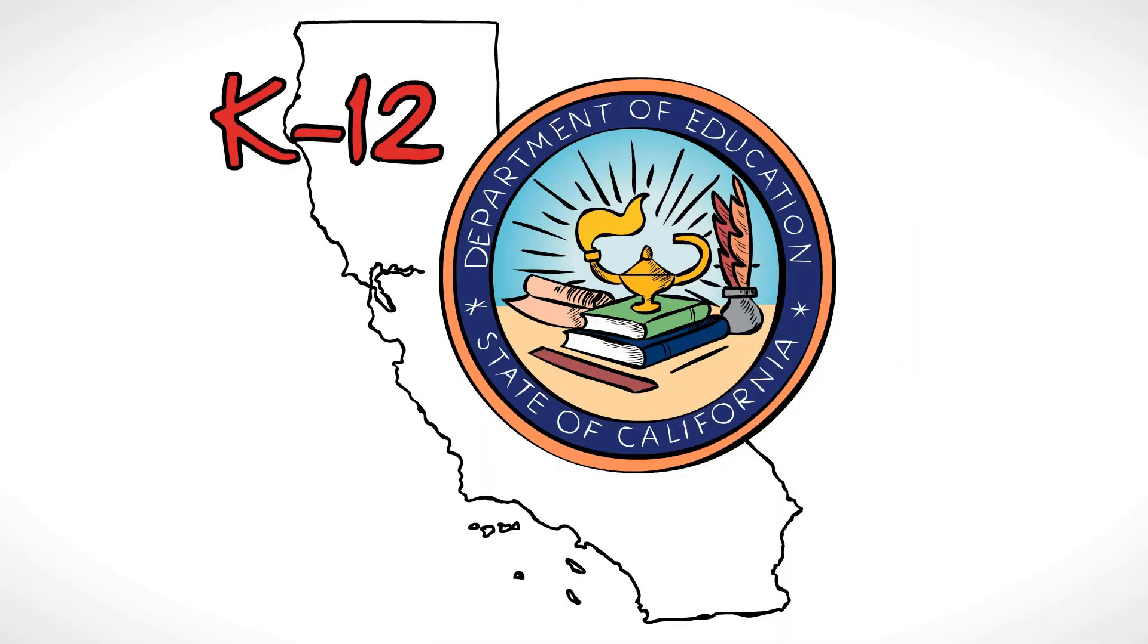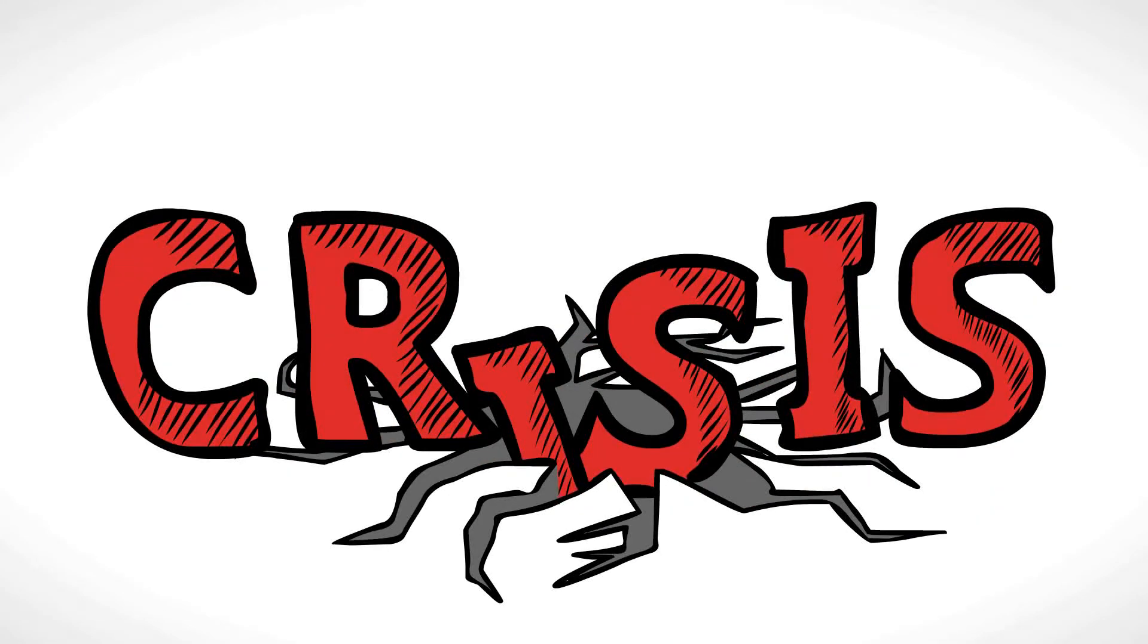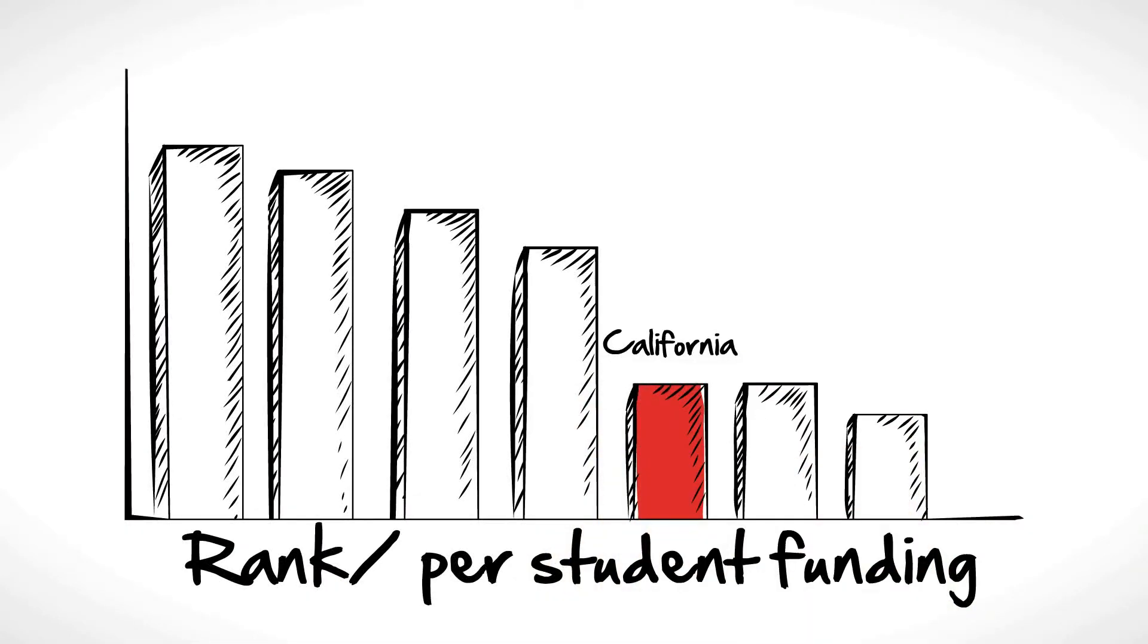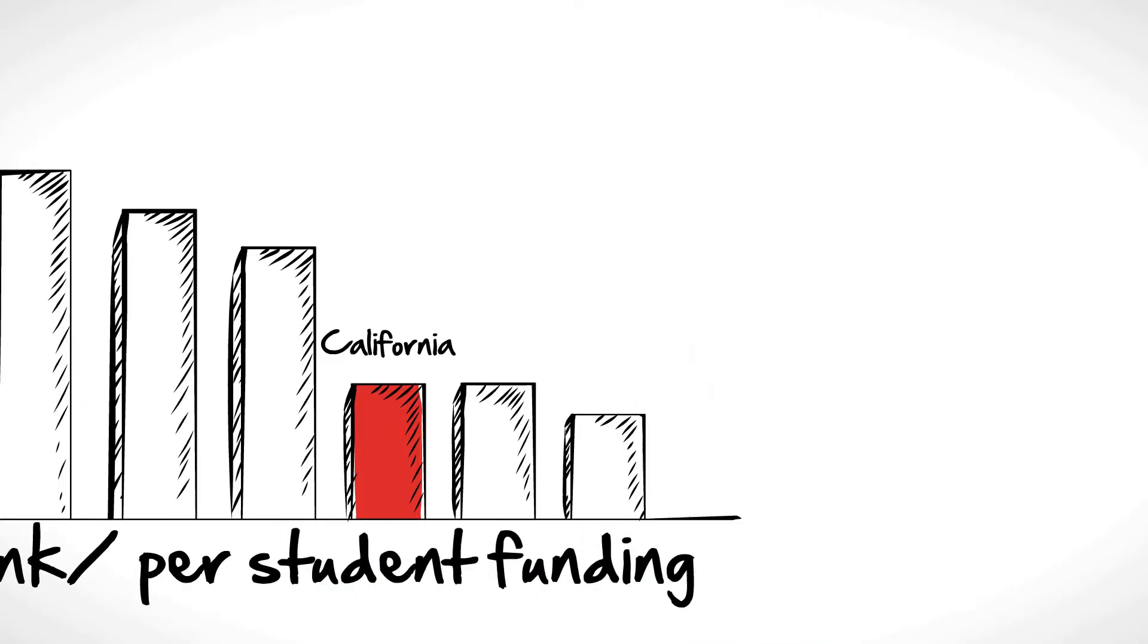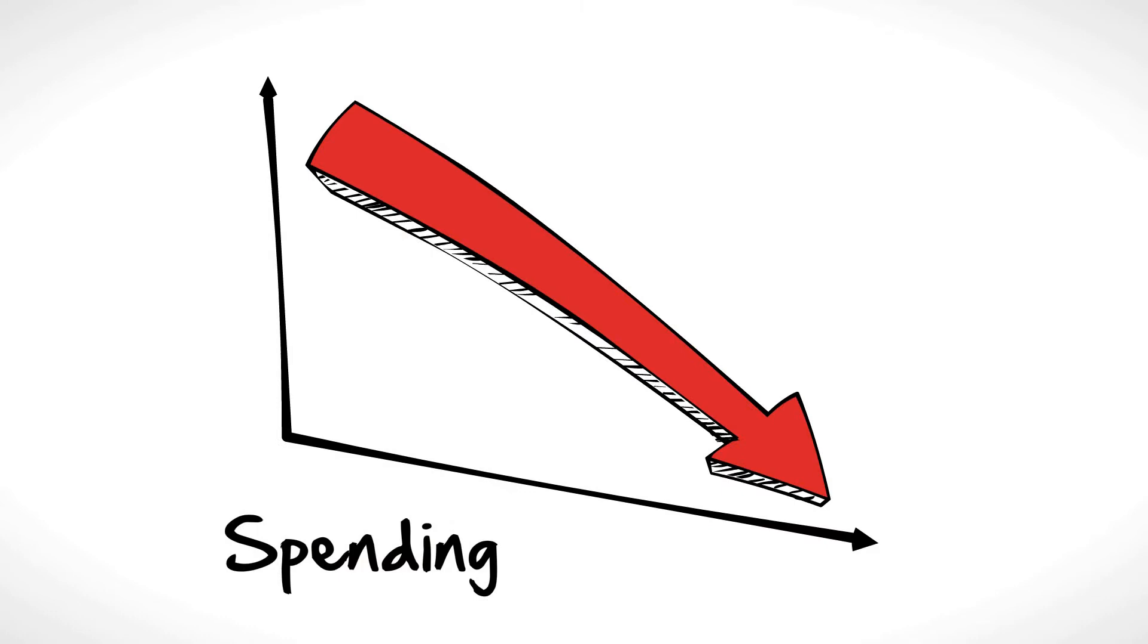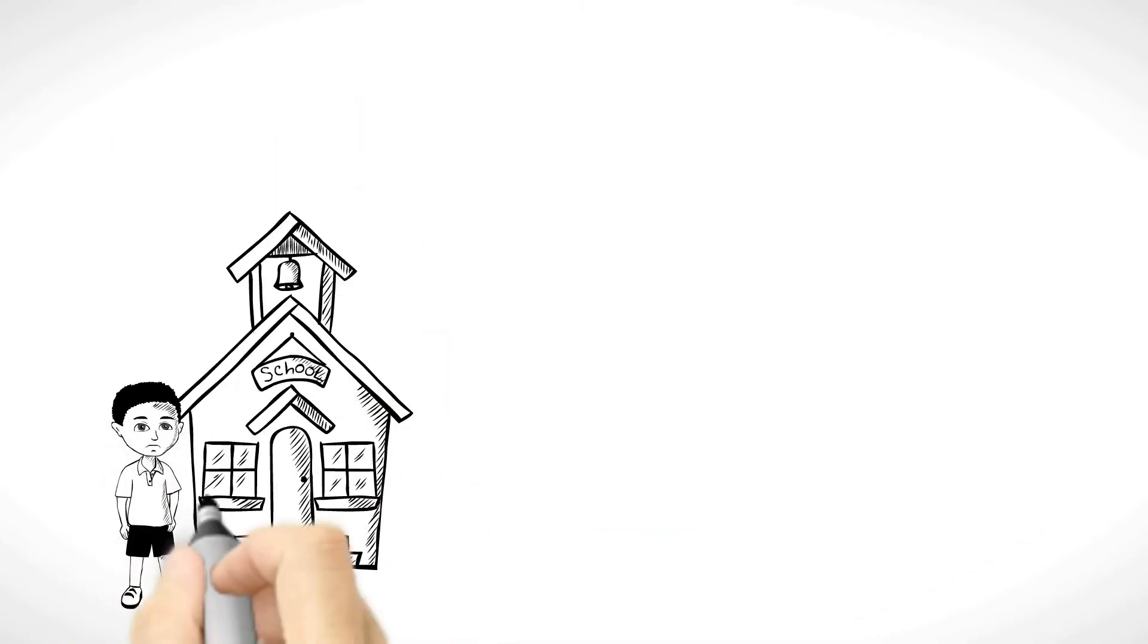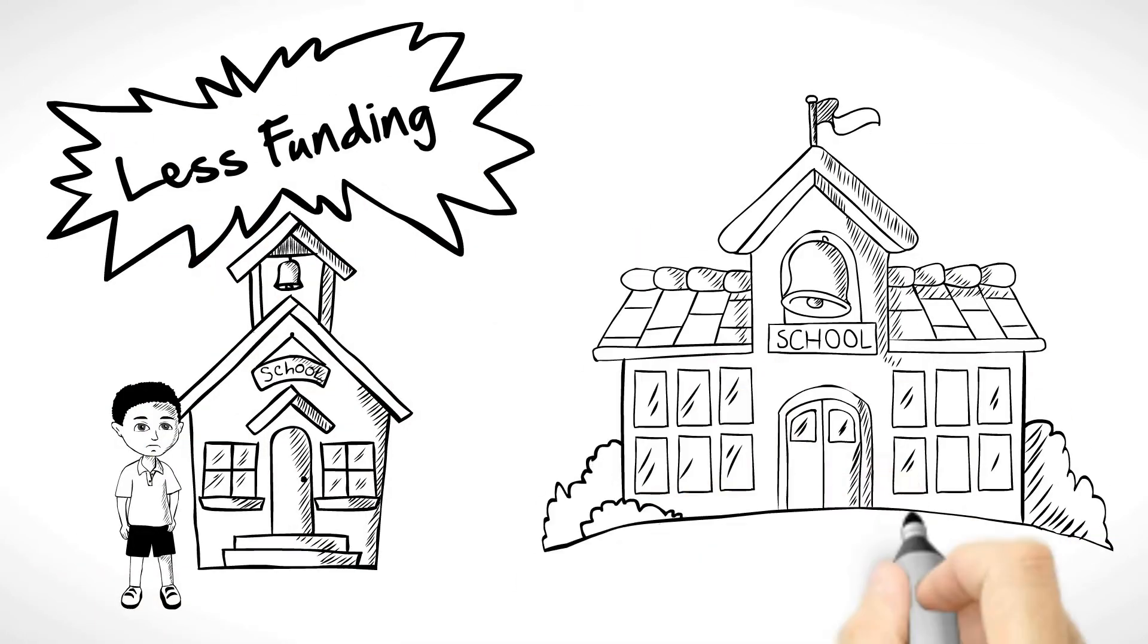K-12 education in California is in crisis. Not only does California rank near the bottom in per-student funding, and spending has been drastically cut, but students in low-income schools receive less funding than kids in well-to-do neighborhoods.